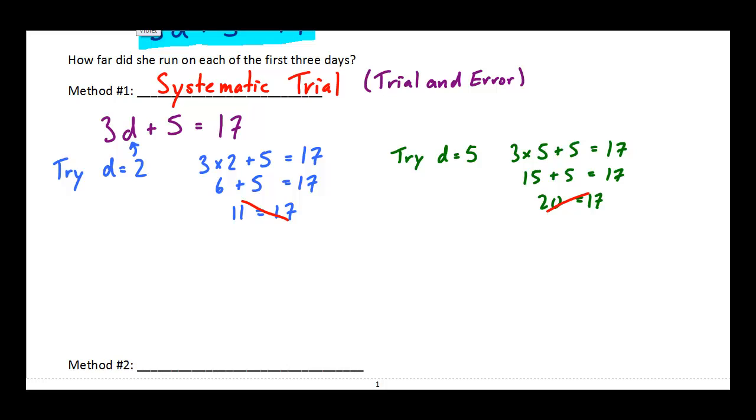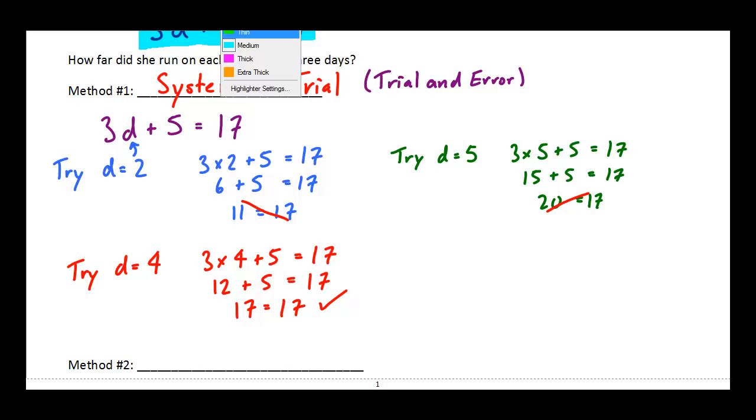I know 2 is too small, but 5 was too big. So maybe this time around I'll try D equal to 4. See what we get. So substitute 4 in every time you see D. So we get 3 times 4 plus 5 equal to 17. Now 3 times 4 is 12. 12 plus 5 is 17. And I'm pretty sure 17 is equal to 17. So what we know then is that our answer here, D equal to 4, is the correct answer. We say that D equal to 4 is a solution to that equation.